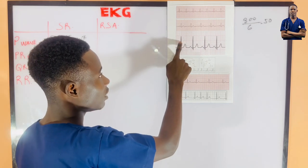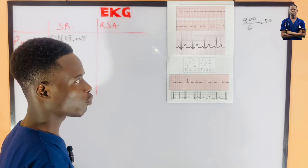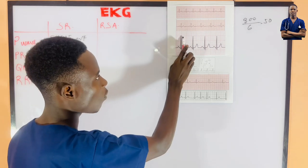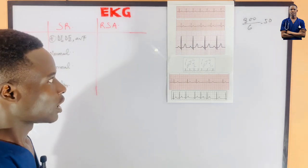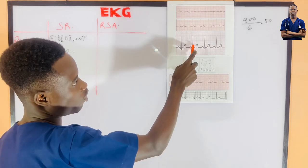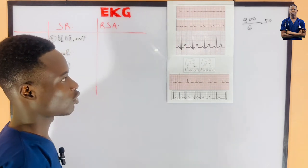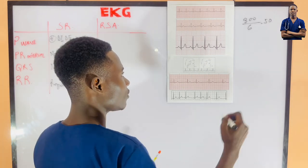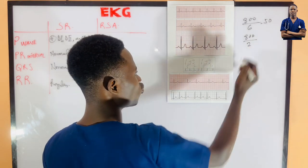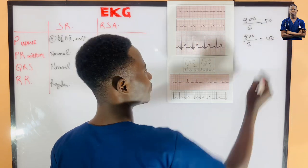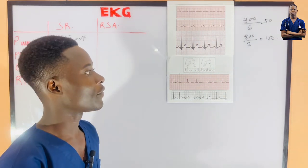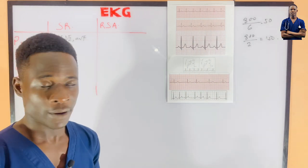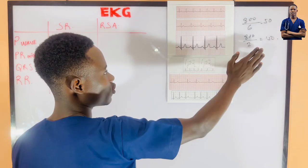Now let's look at this other graph. The distance between R and R — how many big boxes can we find? We find 1, 2 big boxes, and there's one small box. If we divide 300 by 2, we get 150 beats per minute. This 150 is above 100, so we say it is a tachycardia.